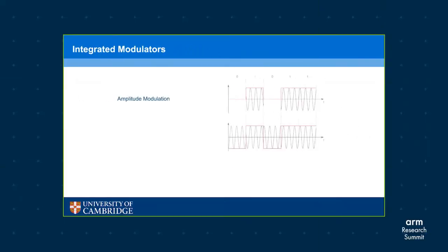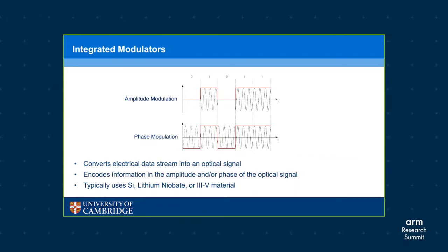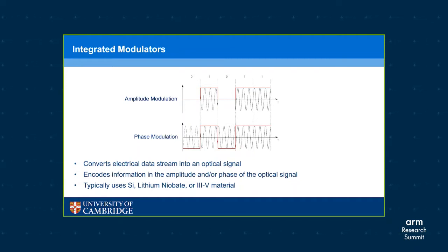There are different ways of encoding information into light. Here I've shown two examples where a binary data stream is encoded into the amplitude and phase of the optical signal. In amplitude modulation, a zero is represented by zero amplitude and a one by amplitude A. In phase modulation, a one is 180 degrees out of phase with a zero. In this binary case there are two symbols. Complex modulation formats use a combination of amplitude and phase modulation to increase the number of bits represented per symbol and therefore increase the capacity of transmitted information. Typically modulators use silicon, lithium niobate, or III-V materials as the active optical material.